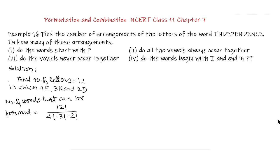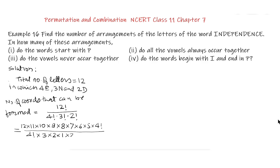We cancel the 4 factorial of numerator by the 4 factorial of denominator, and we cancel 3 multiplied by 2 (that is 6) into the numerator of 12. This gives us equal to 11 multiplied by 10 multiplied by 9.